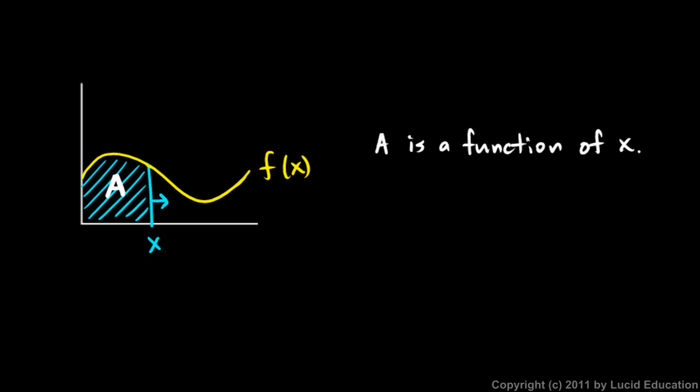So in other words, when my x value is right here where the function is really high, the area is increasing pretty fast because if my x value is right here, each little movement to the right adds a good bit of area